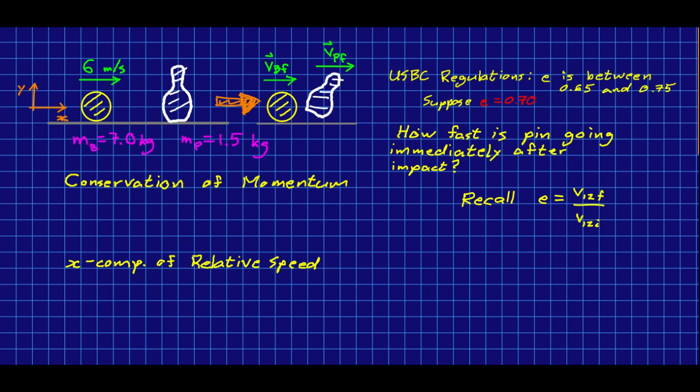Let's find out in this situation with the ball coming along at six meters per second how fast the pin is going immediately after the impact. I've put a reminder here to you of how the coefficient of restitution is defined in terms of relative speeds. And we'll need that.